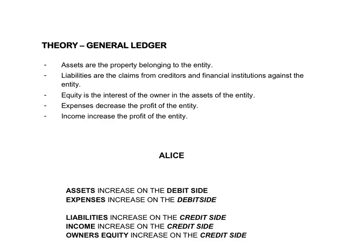Assets are the property of the entity — all the things that belong to the business and that they have control over. Very importantly, in the future it will lead to an inflow of money. Assets increase on the debit side and assets will always have debit balances.